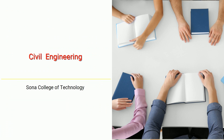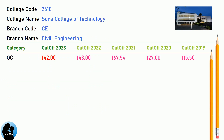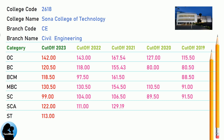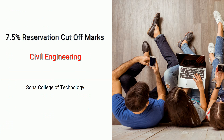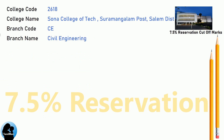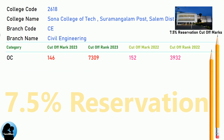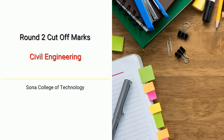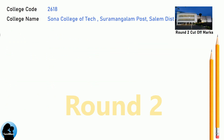DNA cut-off for Sona College of Technology in Civil Engineering. DNA 7.5 Reservation cut-off for Sona College of Technology in Civil Engineering. DNA Round 2 cut-off for Sona College of Technology in Civil Engineering.